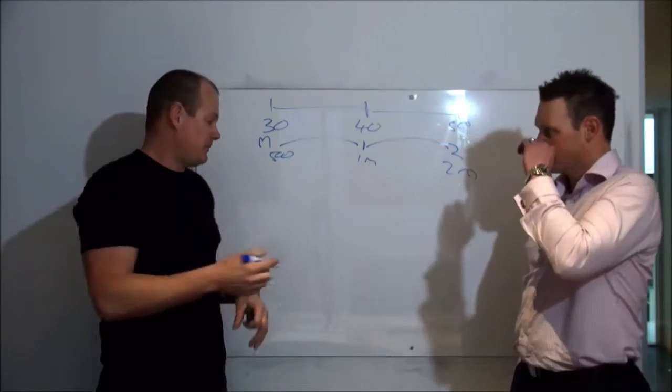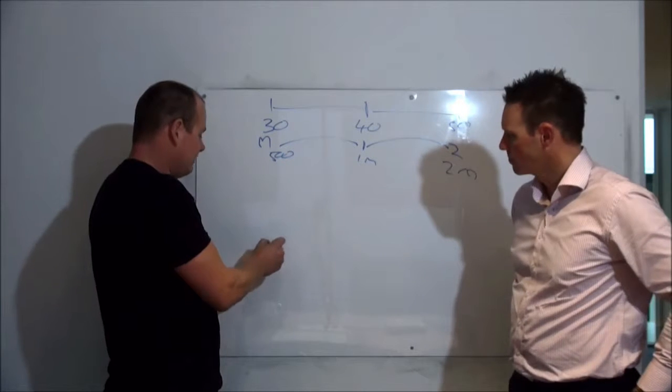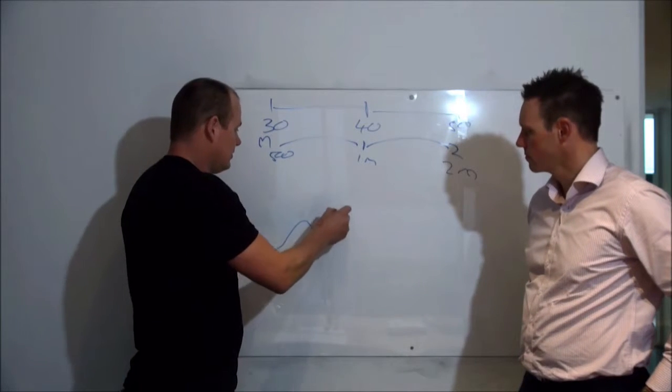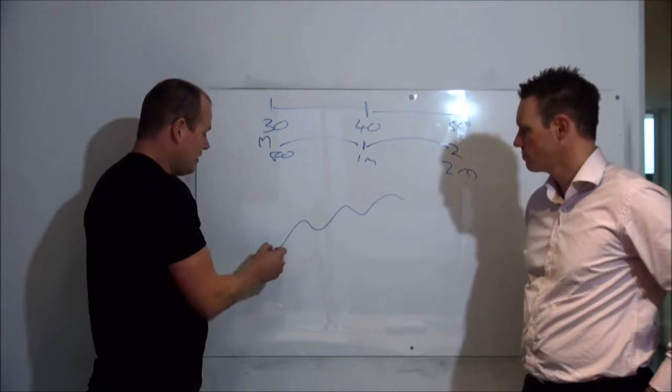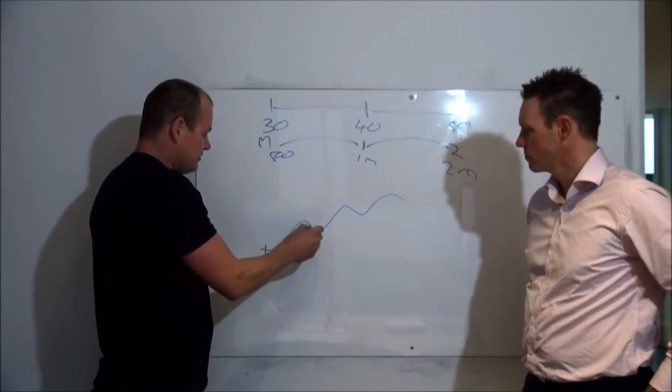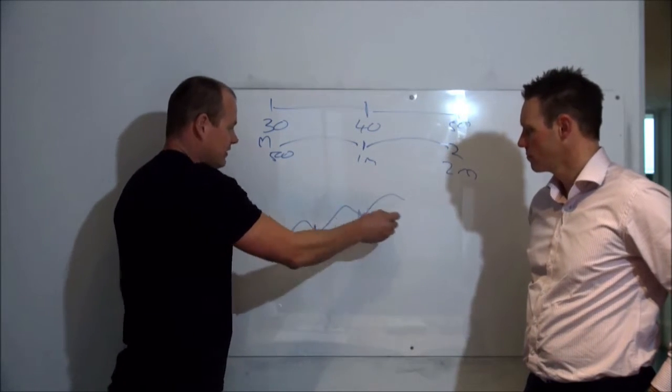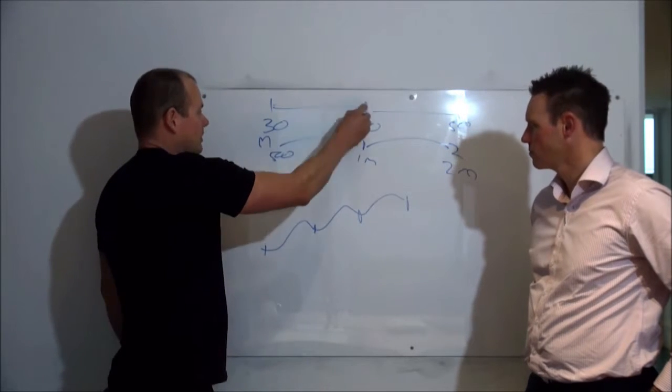But obviously, property cycles, markets as they cycle, tend to do this, not perfectly, but thereabouts. Obviously, this period here to here is one market cycle, and that's basically seen as one market cycle.